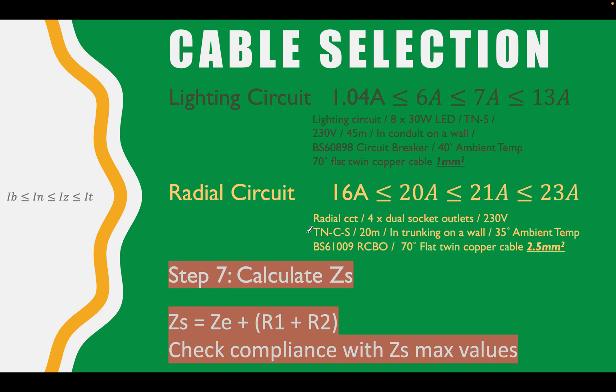So you can see on here we've got lighting circuit, radial circuit, and we've gone through this formula, which is this one, and we've satisfied each part of it so far and we've selected our cable sizes, 1mm and 2.5mm. We previously calculated our R1, R2 value, so we're going to bring that into this step now and add it to our ZE to give us our ZS value. And then we're going to check compliance with the ZS maximum values. We're going to look at them in the on-site guide and in BS7671.